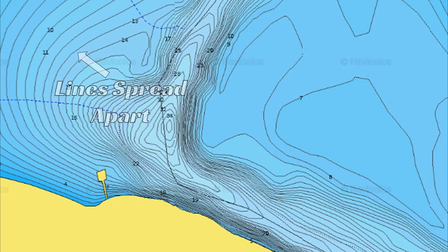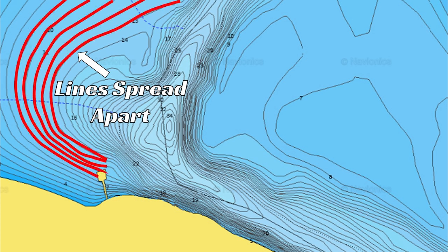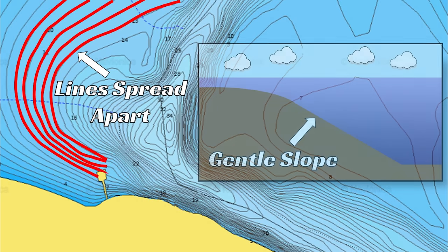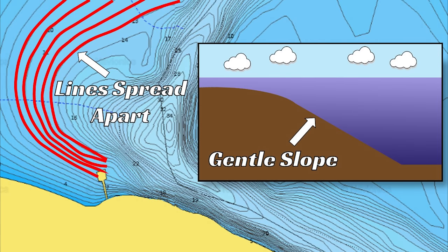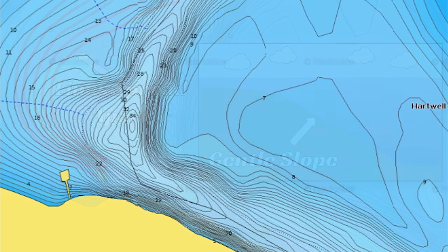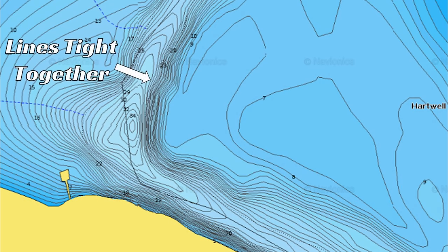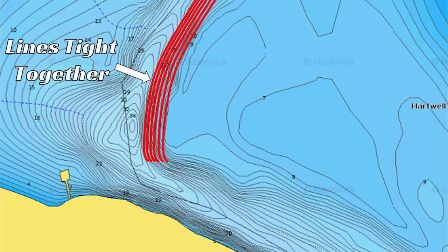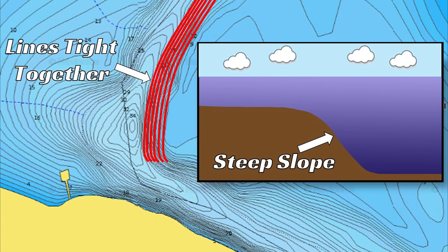We'll use these lines to determine the slope of the lake's bottom. For example, if the lines are spread apart by a decent amount of space — maybe a quarter inch between each line — it means the bottom has a very gentle slope. The depth is getting deeper gradually over a long distance. On the other hand, when lines are grouped tight together with barely any space between them, this indicates a steep slope where an area goes from shallower to deeper water very quickly.